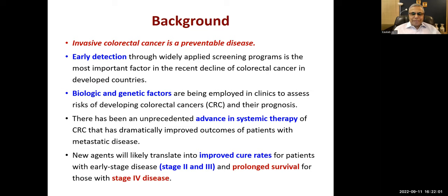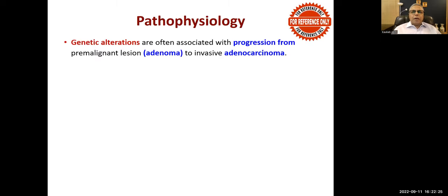New agents will likely translate into improved cure rates for patients with early disease - stage two and stage three - and prolonged survival for stage four. Stage one disease is considered curative by surgery alone, though it depends. For locally advanced disease, surgery is followed by adjuvant chemotherapy.